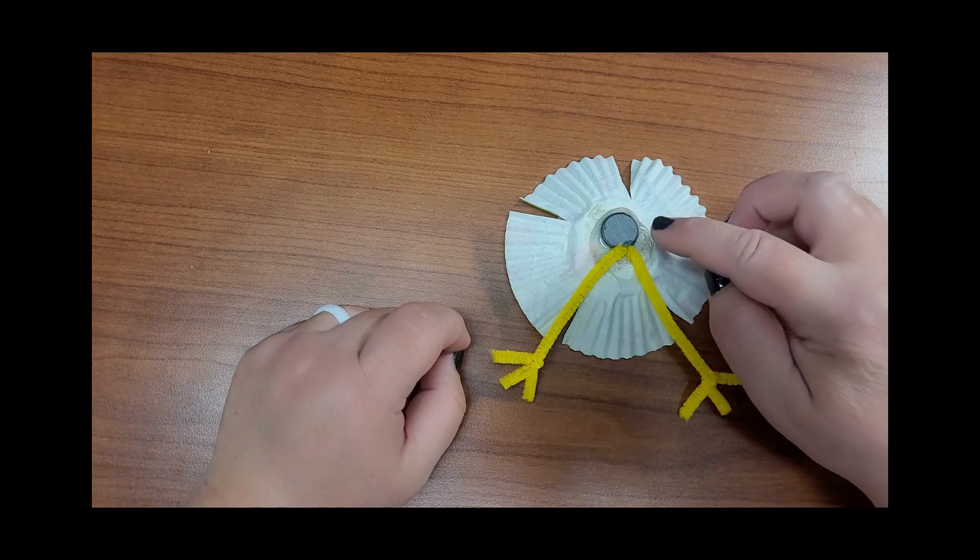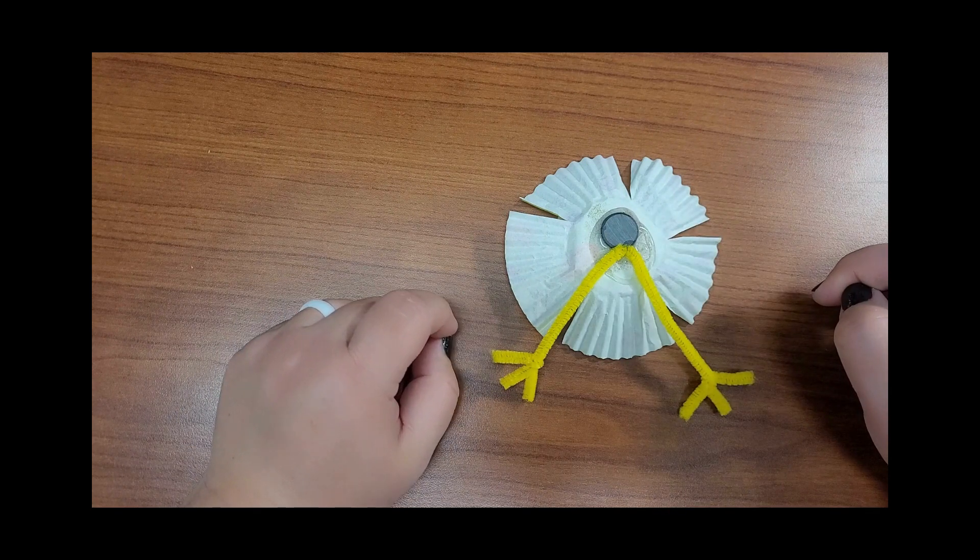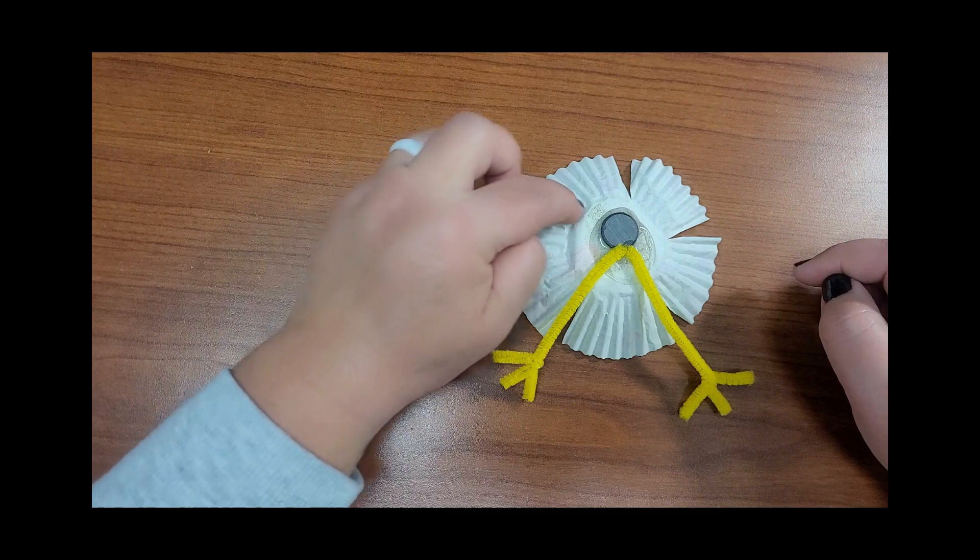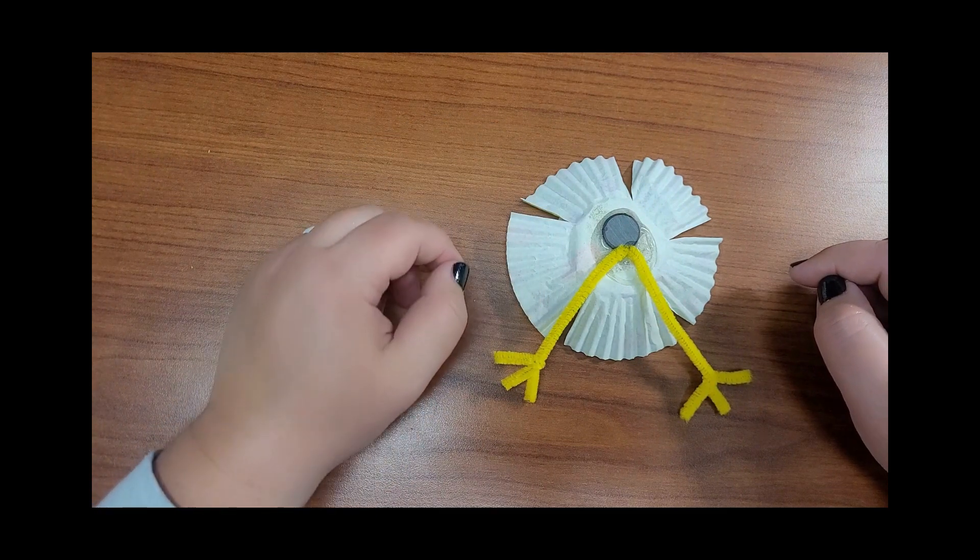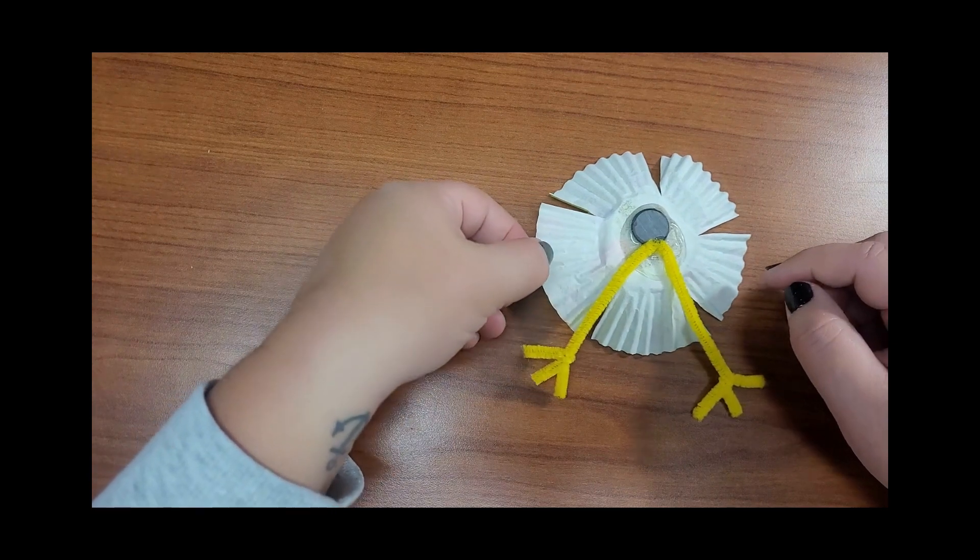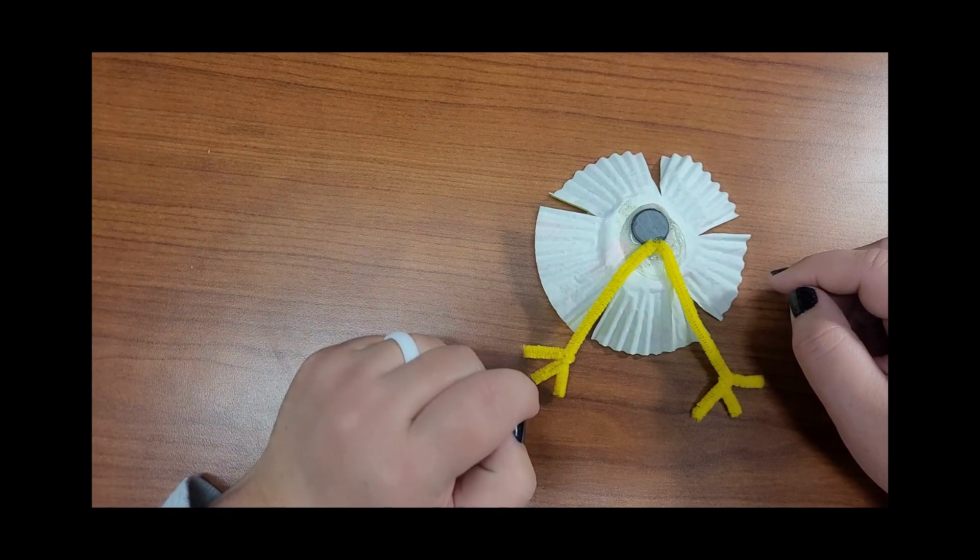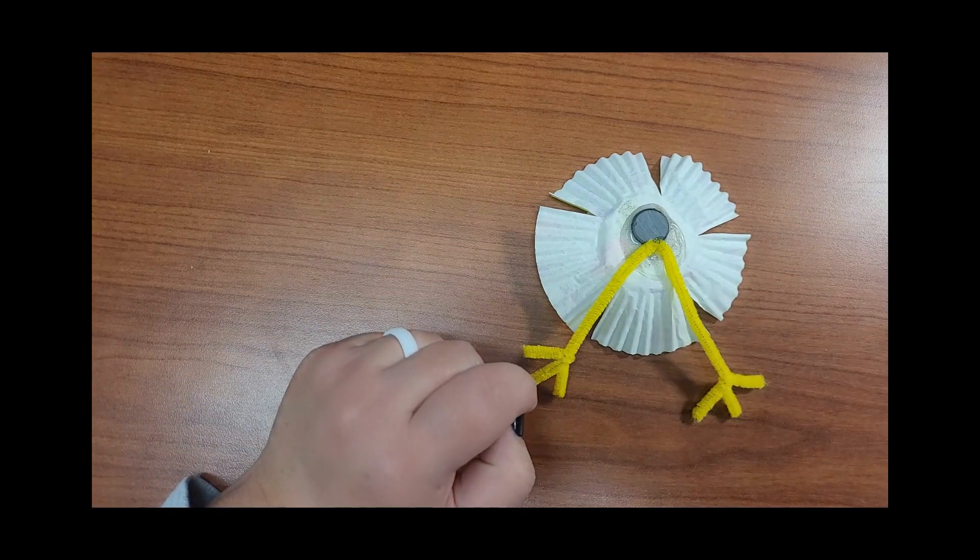So you want to glue both of those to the back of that cupcake liner and make sure it's the part that the Gatorade lid is glued onto. And you'll let that dry, and then you'll have a fun turkey magnet to add to your fridge. Happy November!